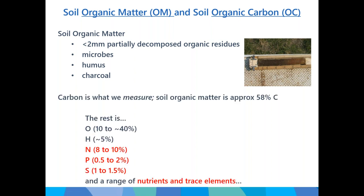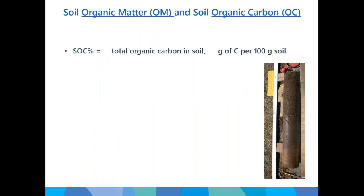Organic matter is approximately 58 percent carbon, meaning the remaining 42 percent is other important nutrients — nitrogen, phosphorus, sulfur, and a range of trace elements important for plant growth. When you send your soil sample to a lab, results typically come back as soil organic carbon percentage — the total organic carbon including char, humus, and particulates — also reportable as grams per 100 grams of soil. The national protocol recommends dry combustion methods. Soil carbon stocks are reported as tons of carbon per hectare, generally to 30 centimetres as per international standards.